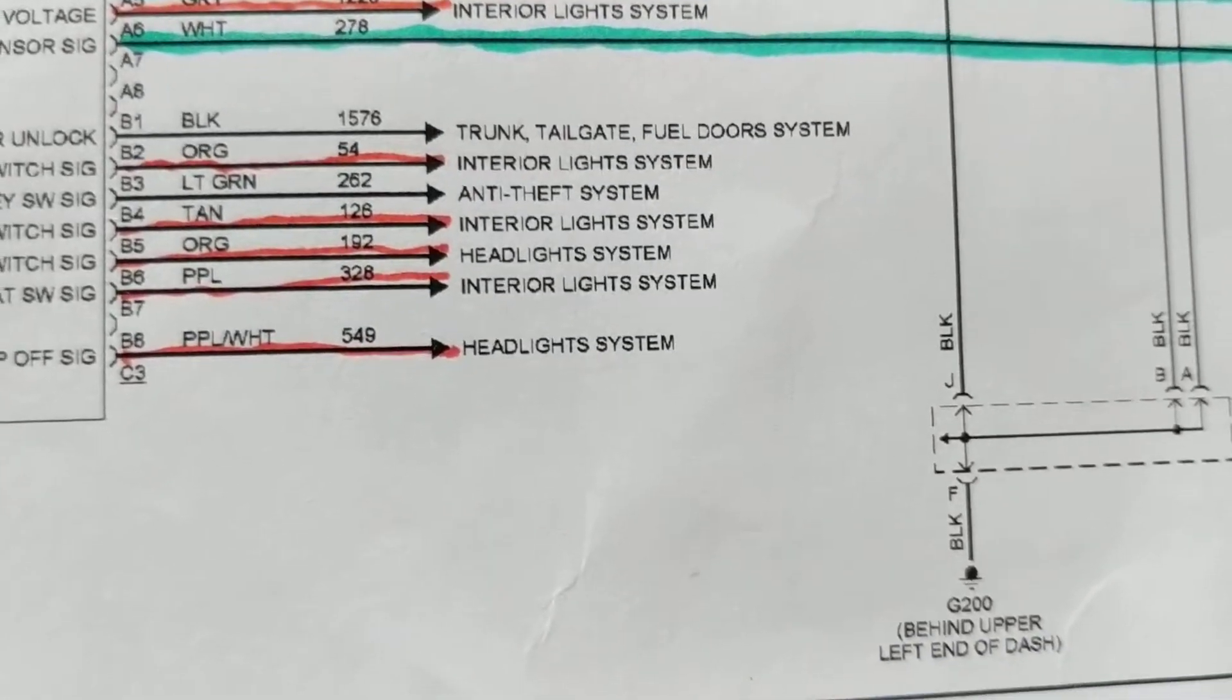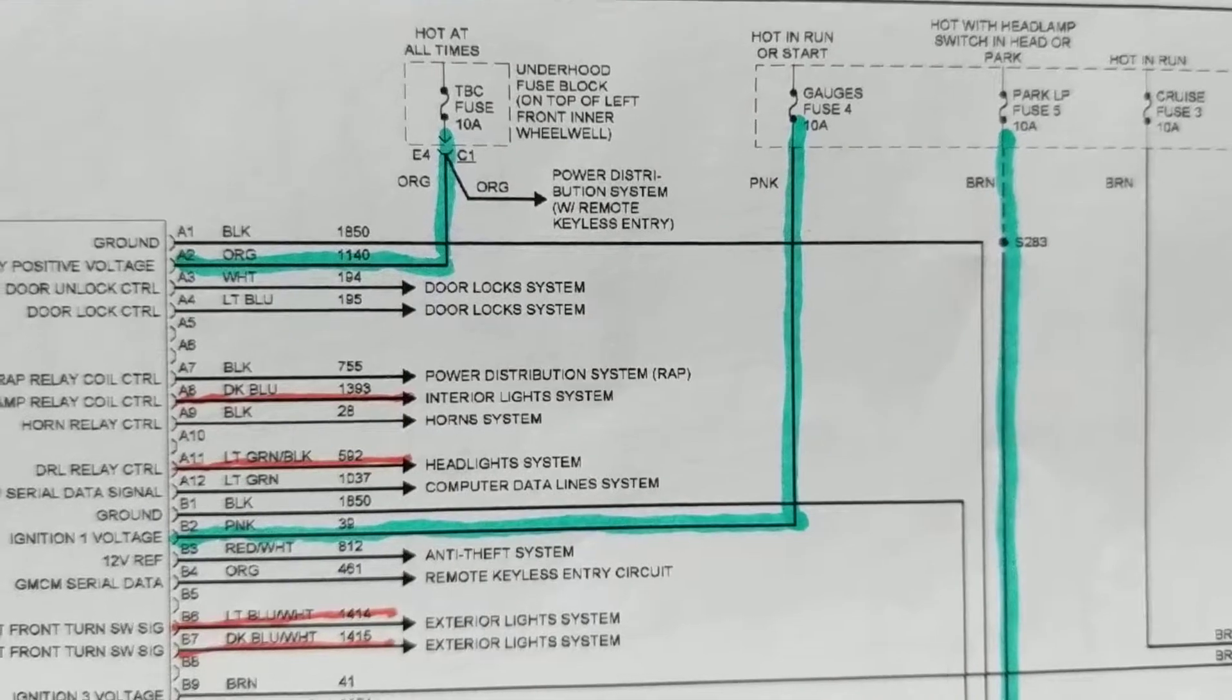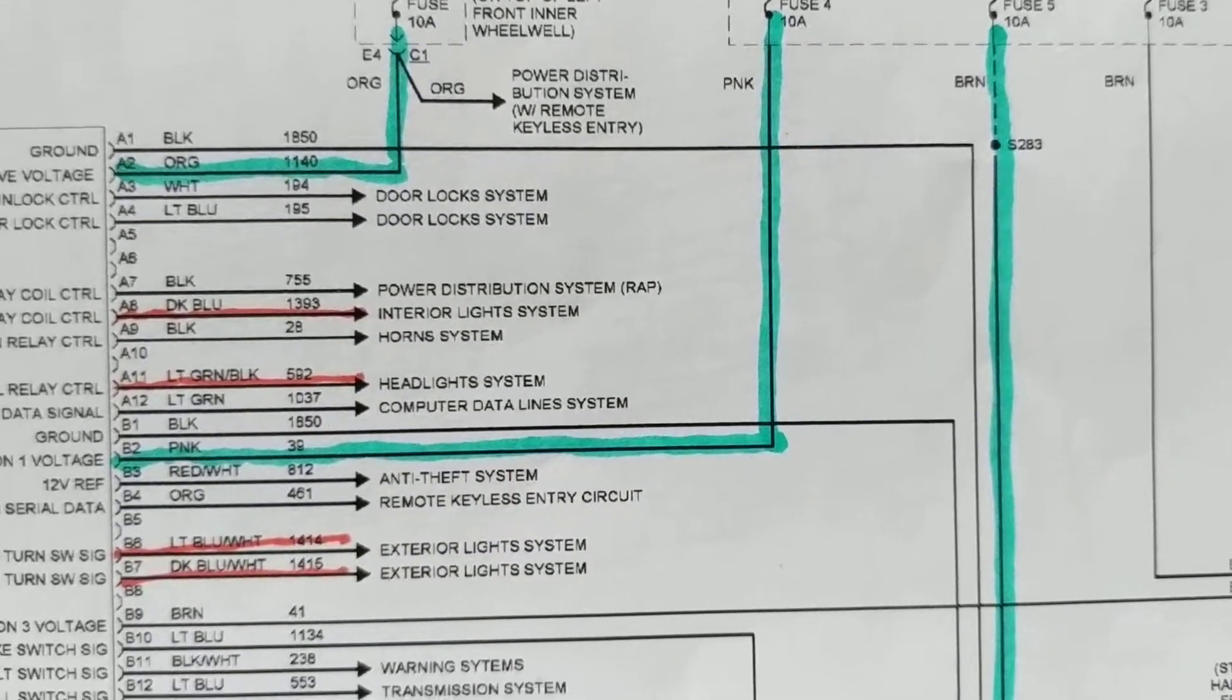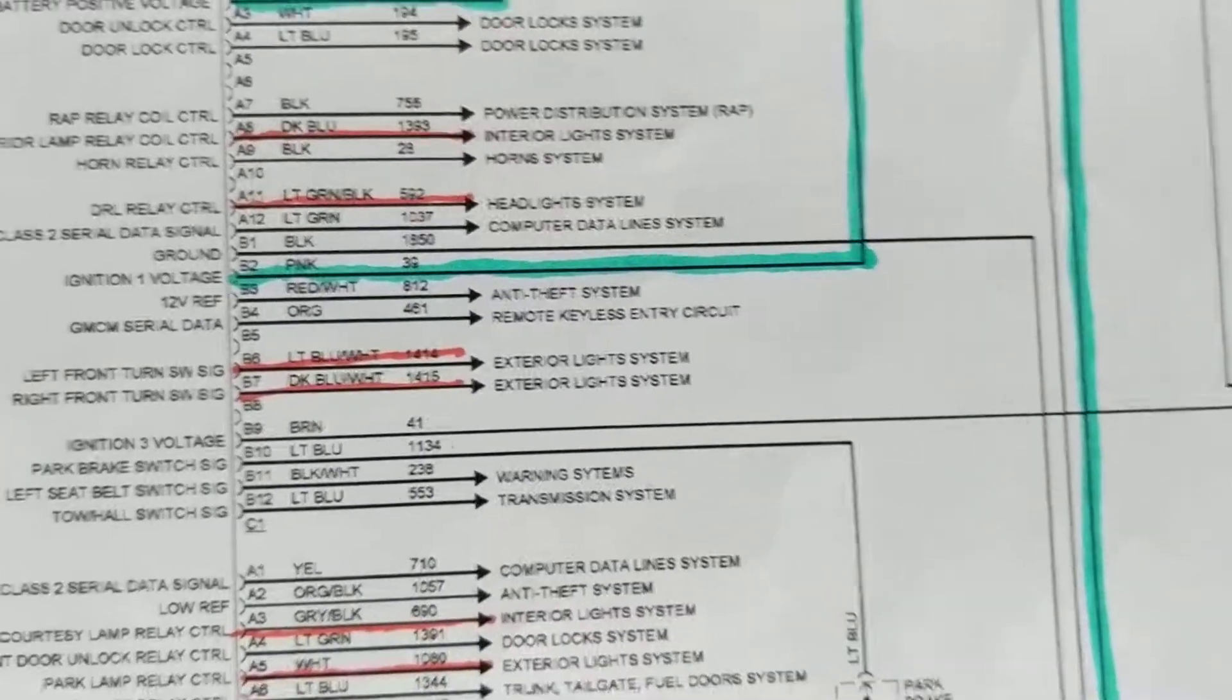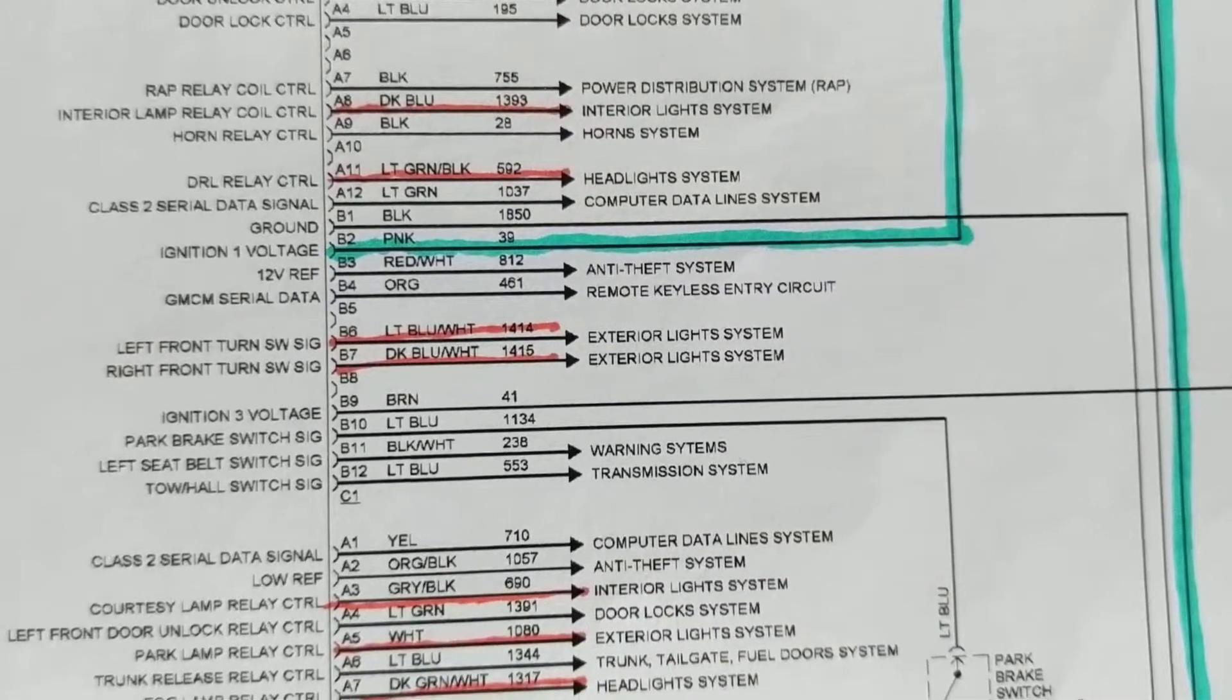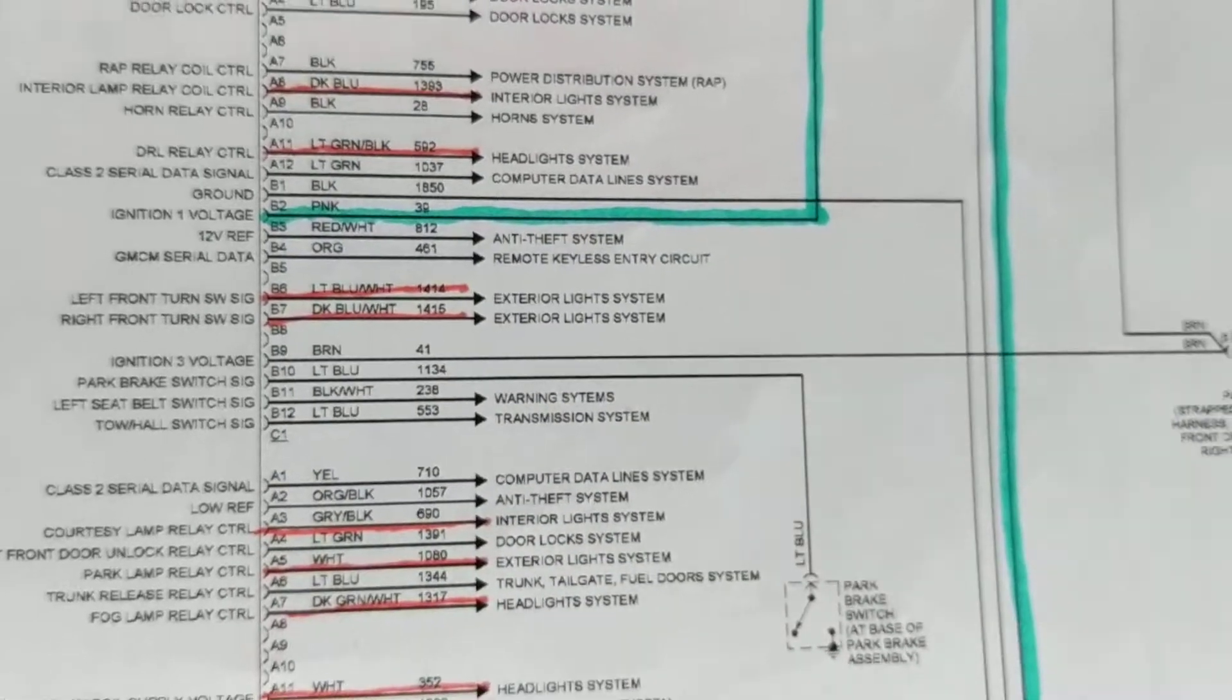And like we said, the other ones, it's your light system, headlight system. And the difference, like I said a couple of times, the PCM has to do with engine performance - air temperature, anything that goes into the engine, oxygen sensors, anything exhaust, anything. That's the difference between them.